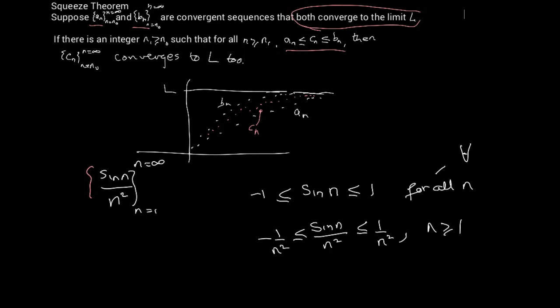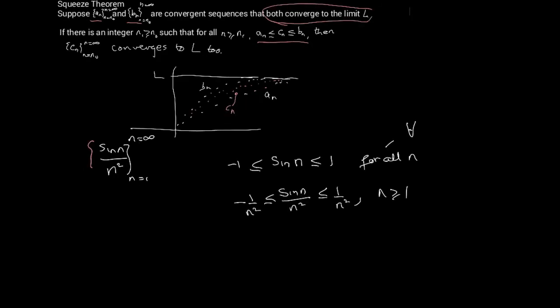This is the n₁ in the theorem. Now the question remains: can we test these two sequences — one over n² and minus one over n²? We have to look at their limits. The limit of minus one over n² as n goes to infinity is clearly zero, and also the limit of one over n² is zero. Both limits are zero.